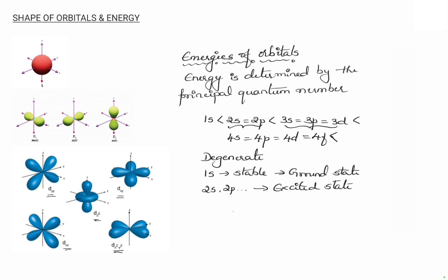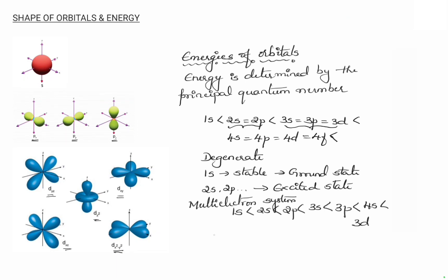For a multi-electron system, the energy order is: 1s < 2s < 2p < 3s < 3p < 4s < 3d. This order is determined by the value of n plus l — if the n+l value is lower, the orbital has lower energy. If two orbitals have the same n+l value, the one with the lower value of n will have lower energy.